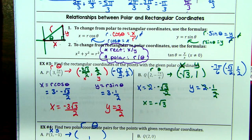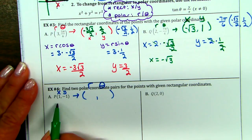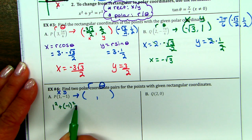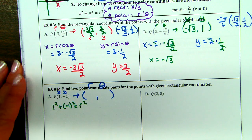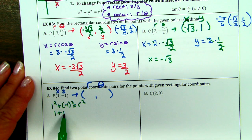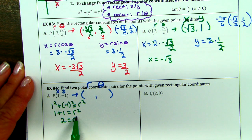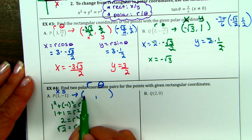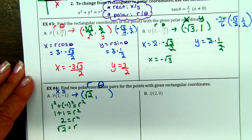Basically, Pythagorean theorem: x squared plus y squared equals r squared. 1 plus 1 is 2. We're on the unit circle — our radius is a hypotenuse, and the hypotenuse is always positive. So don't worry about ever getting a negative r in these.